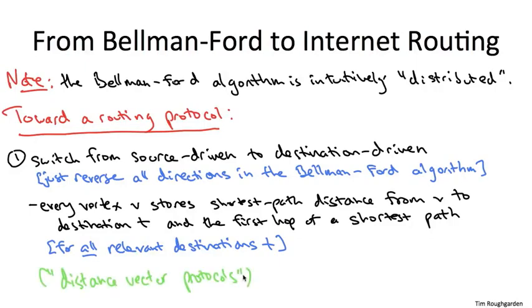You'll sometimes hear Bellman Ford based shortest path protocols like this one called distance vector protocols. The distance vector that this term refers to is at a given vertex. You have a vector indexed by possible destinations T, and you're keeping track of the shortest path distance in the first hop for all of those destinations.